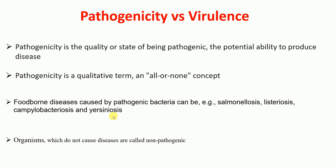and yersiniosis. So pathogenicity is the state or quality of being pathogenic — the organism either can cause disease or it cannot. It is a qualitative term. If the organism causes disease it is called a pathogenic organism; if it does not cause disease it is called a non-pathogenic organism. Now moving to another term: virulence.